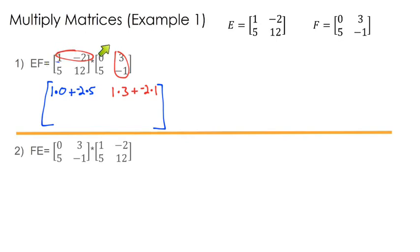So we do 1 times 3 plus negative 2 times 1. Note, 1 times 3, the first element times the first element, plus negative 2 times 1, the second element times the second element.